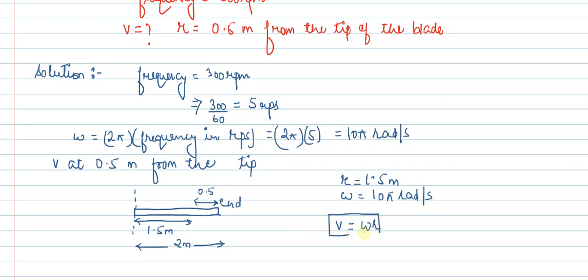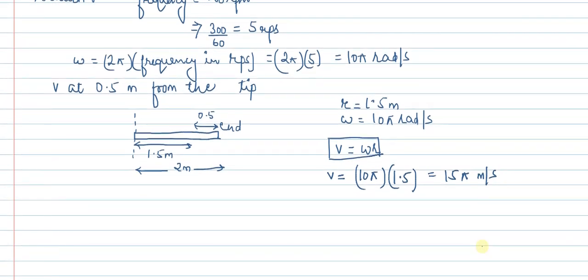Using the formula, v will be 10π into 1.5, which equals 15π meters per second. We can solve this further by putting the value of π. So we get v equals 15 into 3.14, which comes to around 47 meters per second.